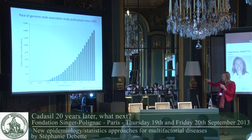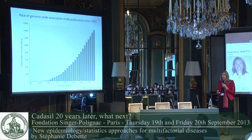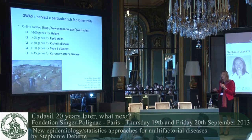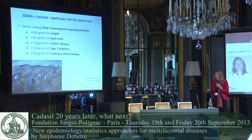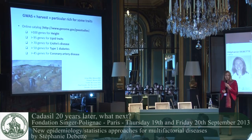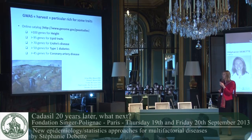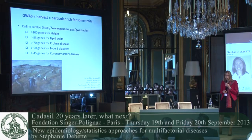They have led to the identification of over 2,000 robust genetic associations with over 300 diseases or traits. And the pace of discoveries continues to increase quite steadily. Some diseases have had quite a rich harvest with over 95 genes discovered for lipid traits, between 45 and 70 genes for Crohn's disease, type 1 diabetes, or coronary heart disease.